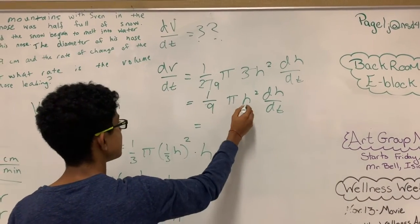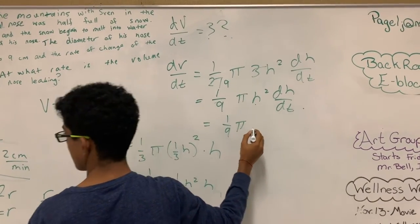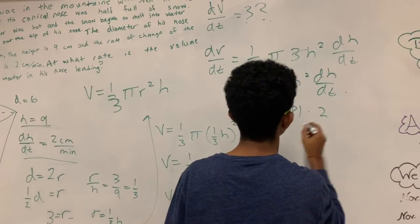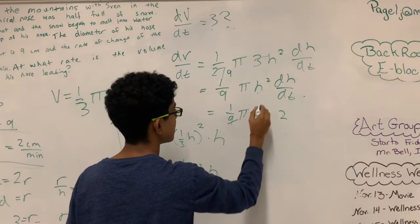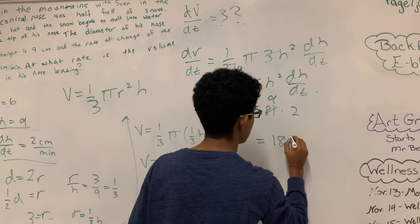Plugging back in h and dh dt, we get 1 over 9 pi. And then h is 9, so we get 81. And dh dt is 2, so times 2. So then we simplify, we get a 9 here. So your answer should be 18 pi.